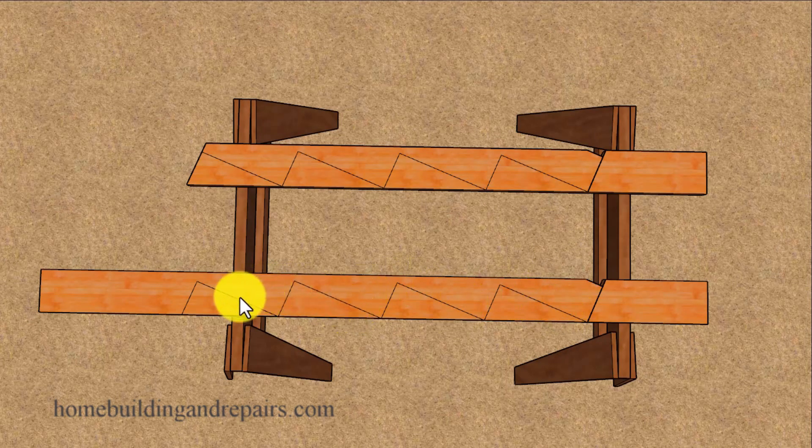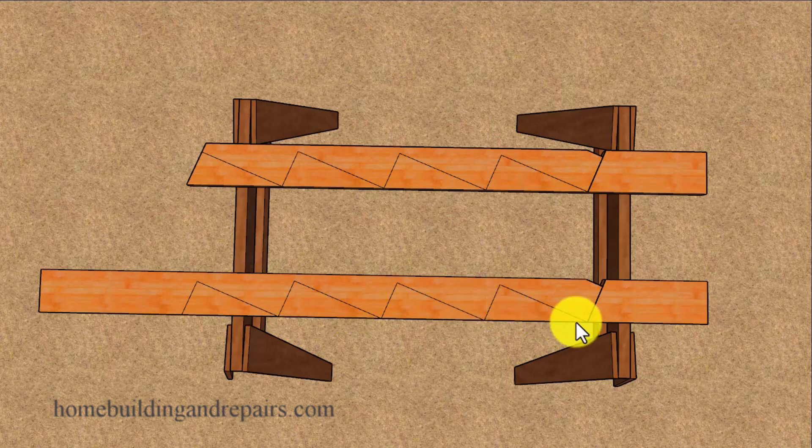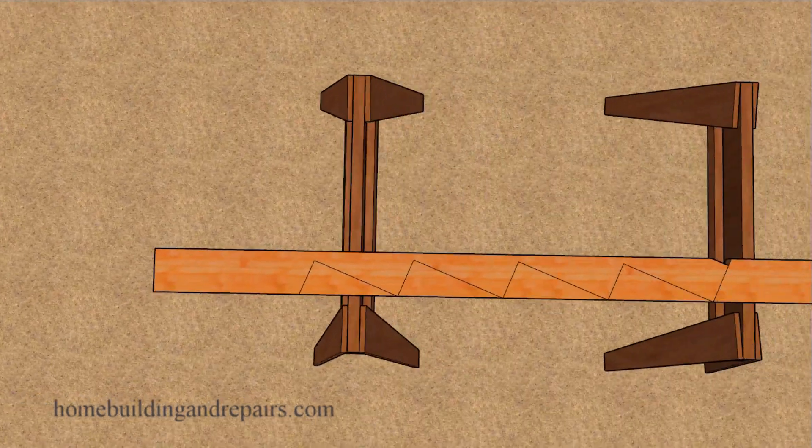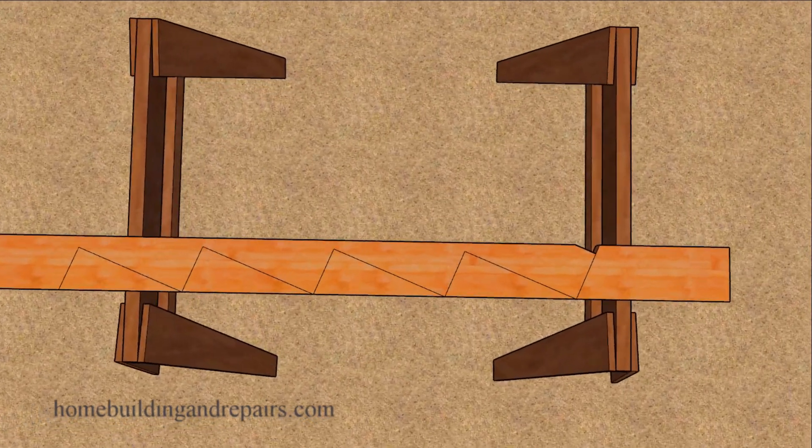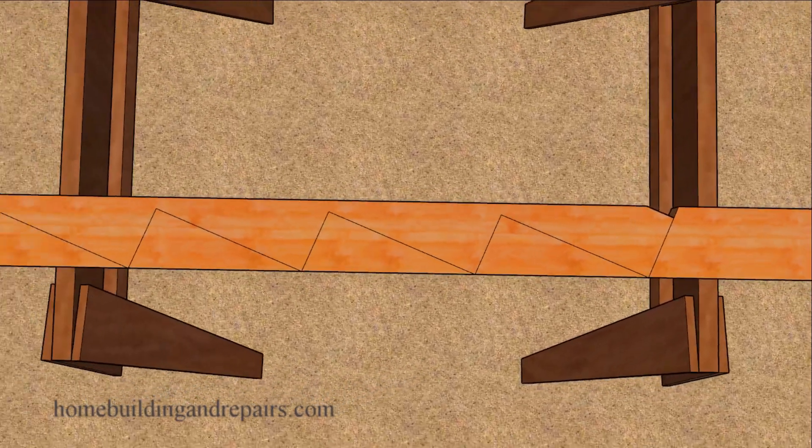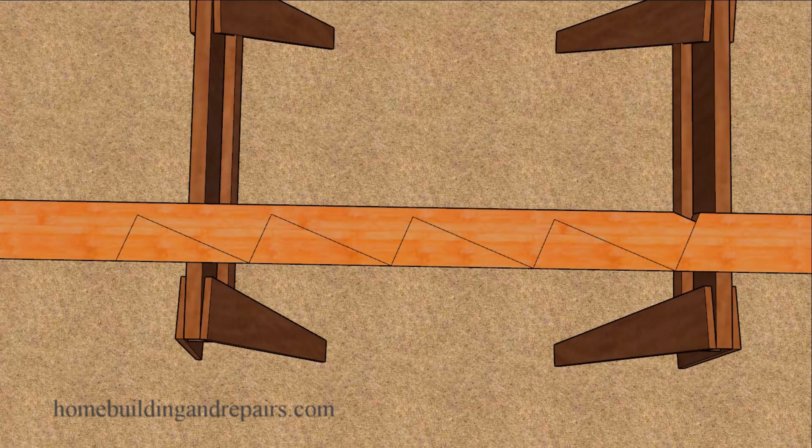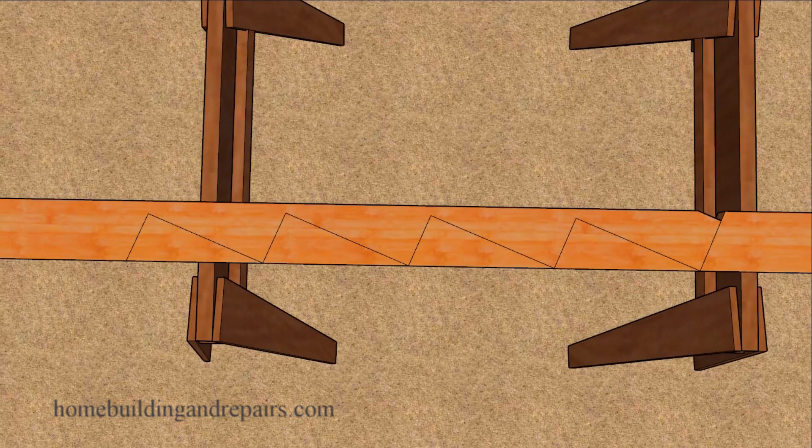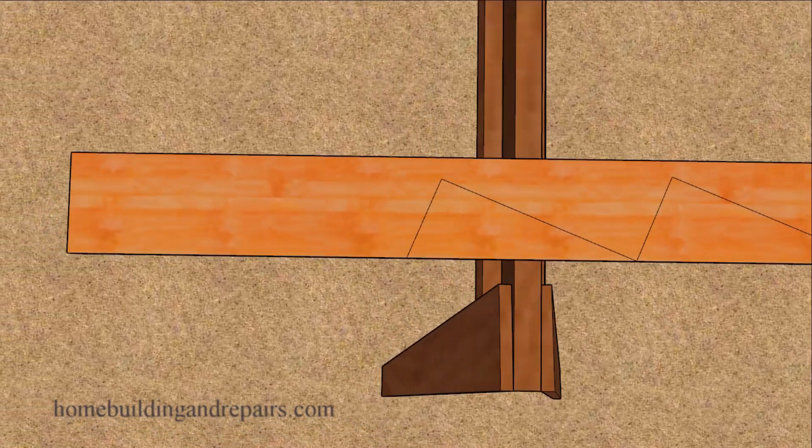I'm going to use the rafter where we have already laid out 4 increments, 4 of our 4 feet increments to save a little bit of time there. I'm going to leave the seat cut on it. If you need more information about the seat cuts again make sure you watch the first video. So let's go ahead and go to the top of the roof rafter.